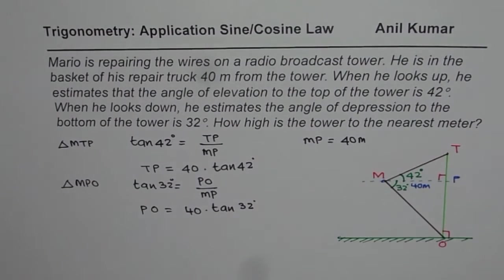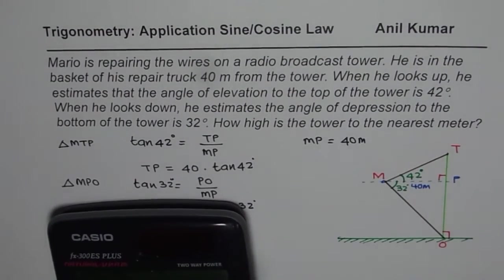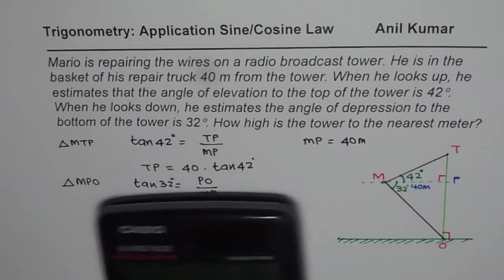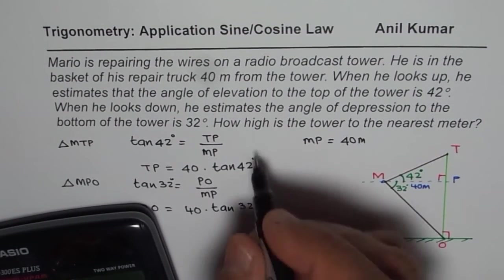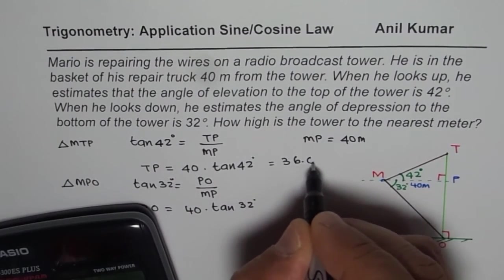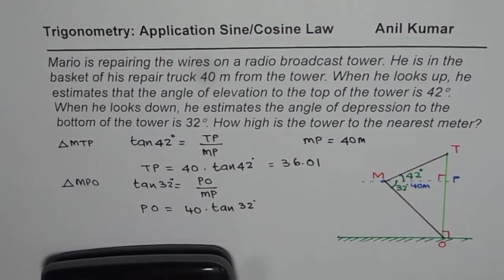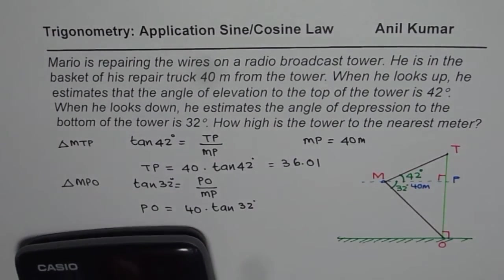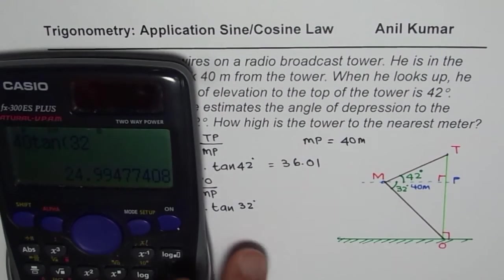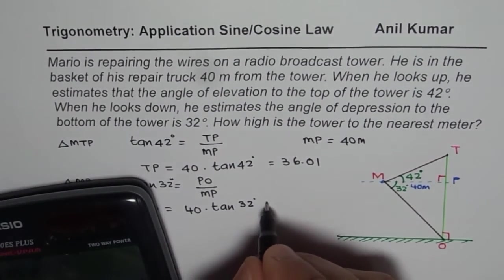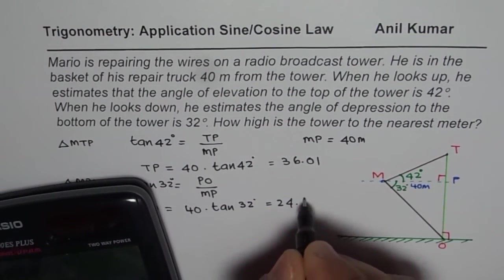Let us use calculator to find both answers. First one is 40 into tan 42. We get 40 tan 42 equals 36.01. Let me write down this as 36.01. The other one is 40 times tan 32, which equals 24.99.